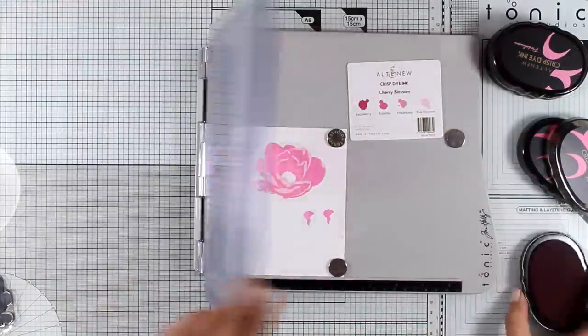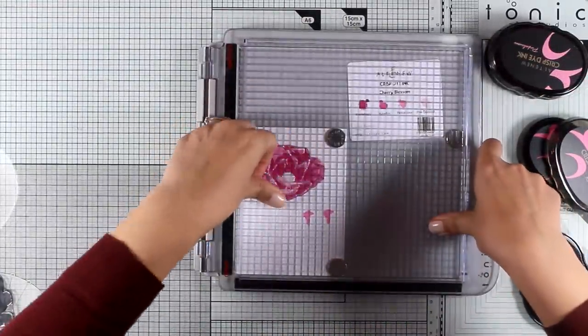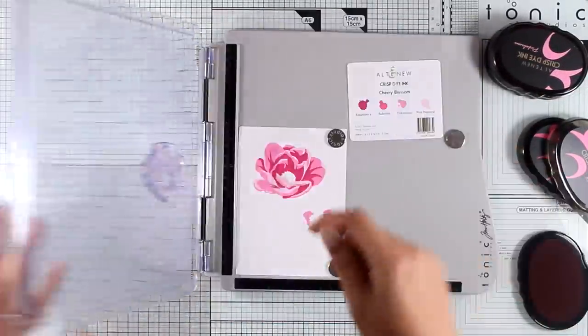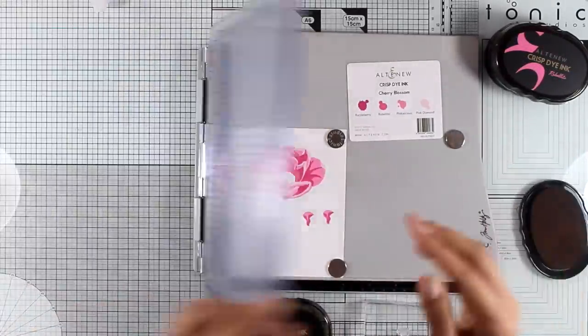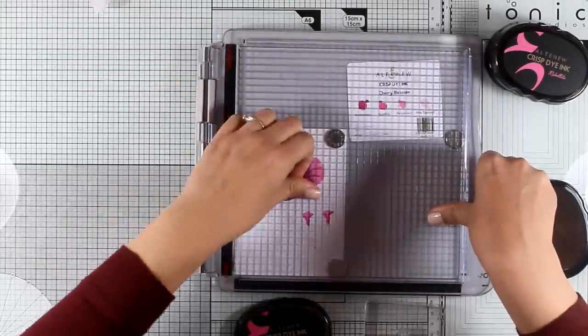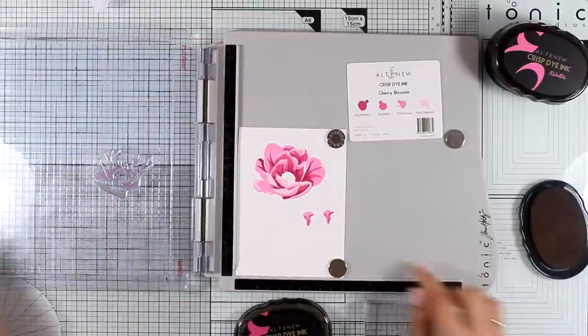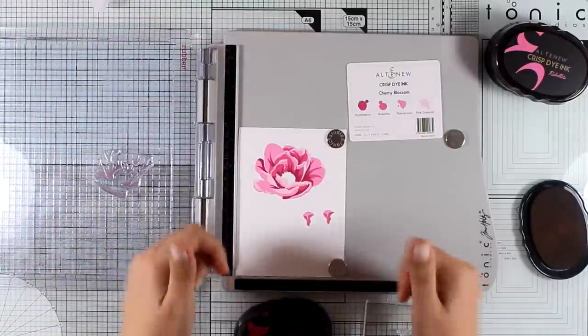Now I'm going to use the third layer and for that I will stamp with Rubelite. And for the last layer of my flower I'm using Razzleberry which is going to make a big difference. Look at all that dimension. I think it looks gorgeous.